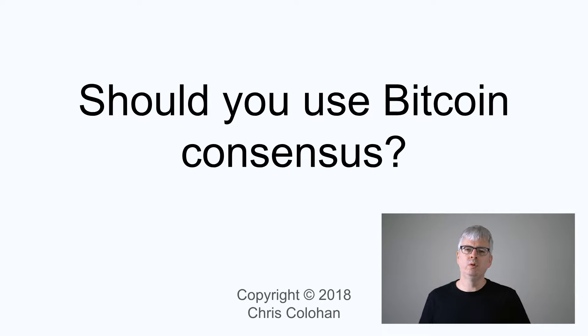In the last two videos, we learned what Bitcoin's blockchain is and how we can build a consensus algorithm on top of it using proof of work. Now you may be wondering, can we just forget everything we've learned in the past about really complicated consensus algorithms and instead just use a blockchain consensus to solve all of our consensus problems? Are Bitcoin's proof of work and Ethereum's proof of stake just better than the classical algorithms like Paxos, Raft, or even Byzantine fault tolerance solutions like PBFT?